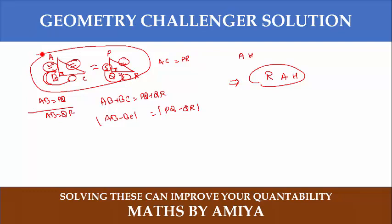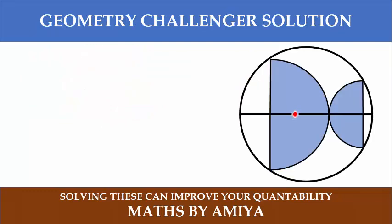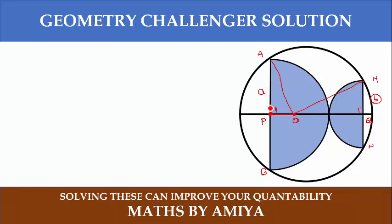Now we are going to use this in our figure. First of all, we need to do some construction. Let O be the center of the bigger circle, with points A, B, M, N. Say point P is where the first semicircle meets, and A is the radius of that semicircle. Say Q is another point, and B is the radius of the other semicircle. Join ON and OA. Since this is the radius, AP equals PB, so we have 90 degrees at both places — if you bisect a chord, you get a 90-degree angle with the center.